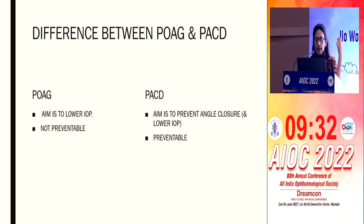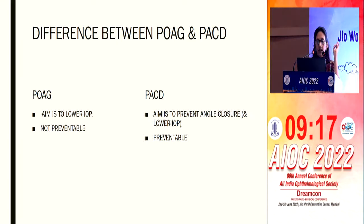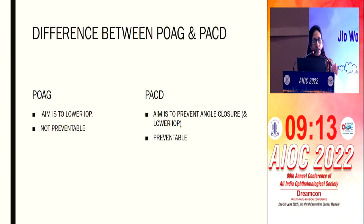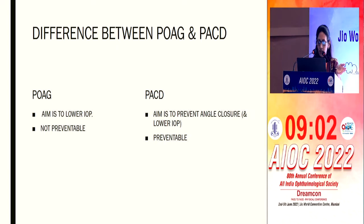Normally people think of open and closed angles as two separate glaucomas. But the aim in primary open-angle glaucoma is to lower the intraocular pressure, whereas in primary angle closure disease, our aim is to prevent angle closure. By preventing angle closure, you prevent the pressure from rising. So to a certain extent, PACG is preventable, whereas POAG is not.